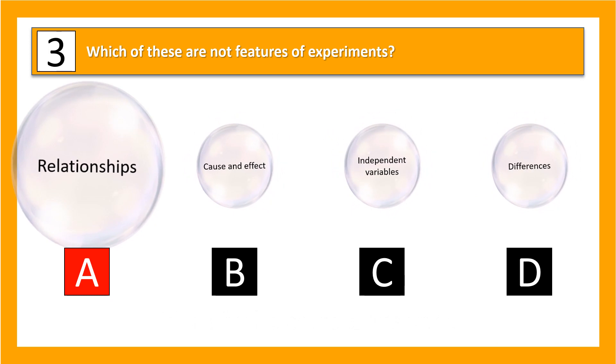The next question: which of these are not features of experiments? We've got relationships, cause and effect, independent variable, and differences. Hopefully you spotted 'relationships' — we spoke about relationships being a feature of correlational research, not experiments.